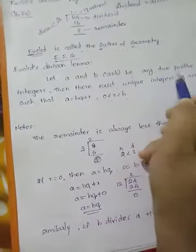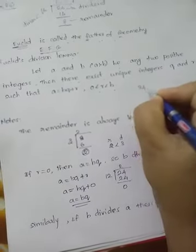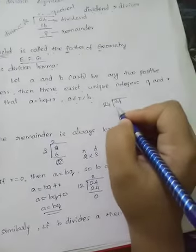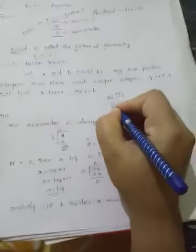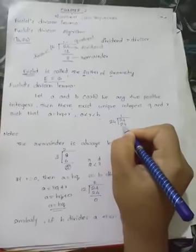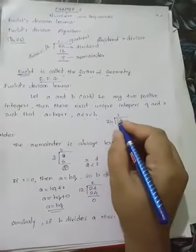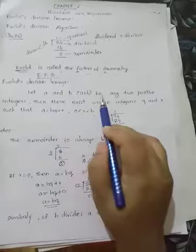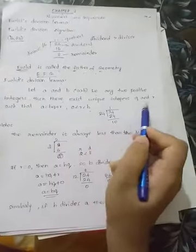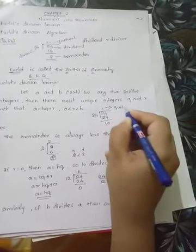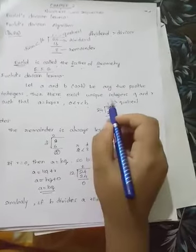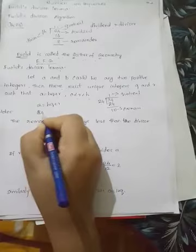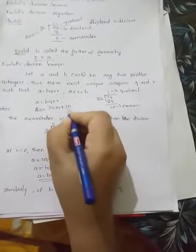Let A and B be any two positive integers. We will take A as 34 and B as 24. These two are positive integers. A is the dividend and B is the divisor. 1 times 24 is 24, so the remaining is 10. Then there exist unique integers Q and R such that A is equal to BQ plus R. Here A is 34, B is 24, Q is 1, plus remainder R is 10.